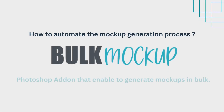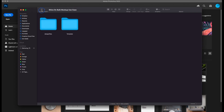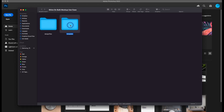To automate this, we'll need Bulk Mockup. Bulk Mockup is a Photoshop add-on that will allow us to automate this mockup generation process. By using Bulk Mockup, we can generate all 150 designs in less than 30 minutes — yes, you heard me right, less than 30 minutes. But before we start with Bulk Mockup, we need to make changes to the template to make it compatible with Bulk Mockup.